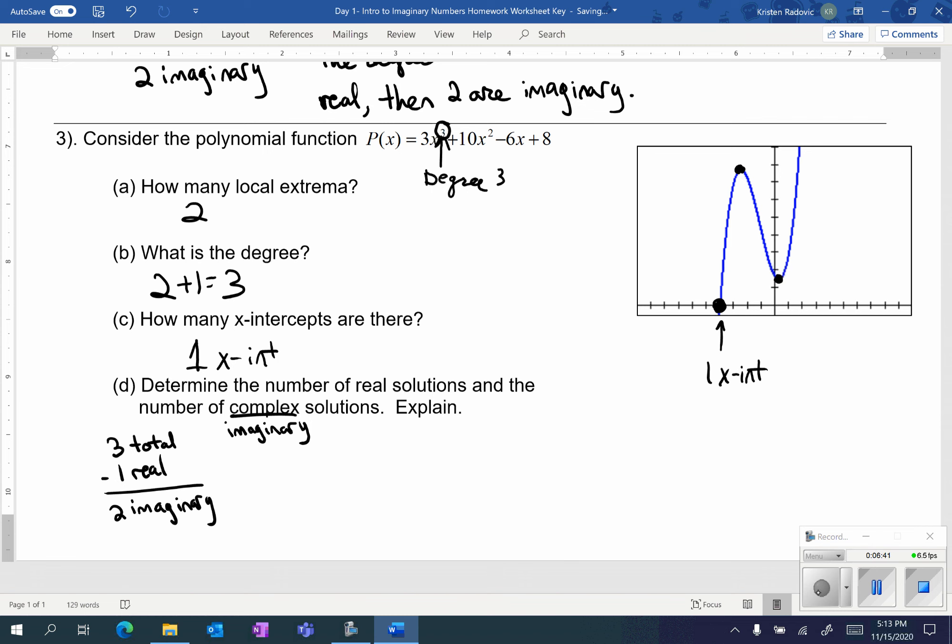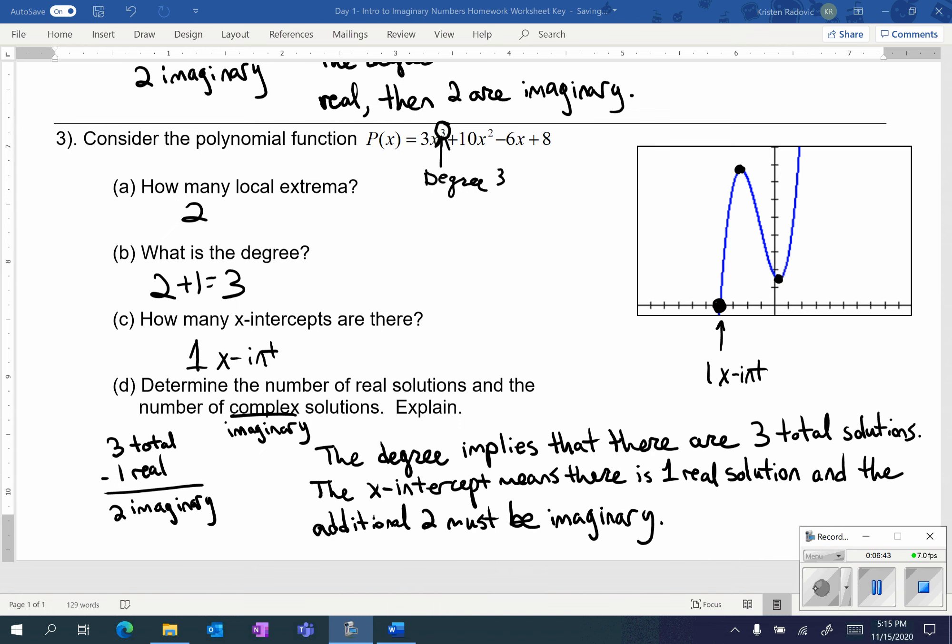Try to think of an appropriate explanation for this. One explanation is the degree implies that there are three total solutions. The x-intercept means there is one real solution, and the additional two must be imaginary.